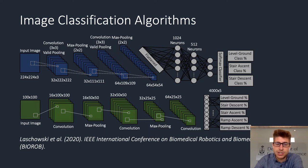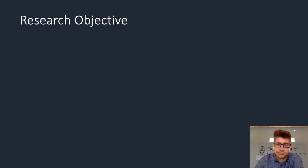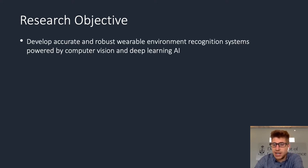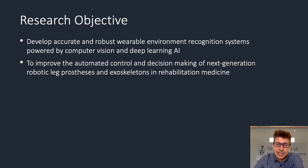Our research objective over the years has been to develop accurate and robust environment recognition systems powered by computer vision and deep learning AI. This is intended to improve the automated control and decision making of next-generation robotic leg prosthetics and exoskeletons in rehabilitation medicine.